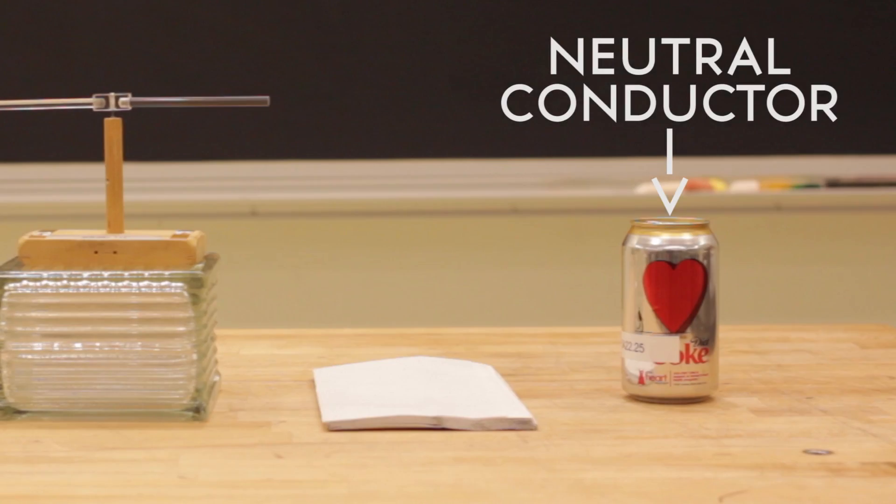This aluminum can is electrically neutral, having the same large number of positive and negative charges. Note that aluminum is a conductor so that charges can move around.